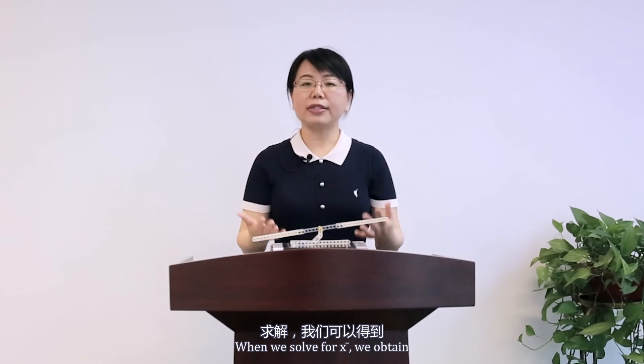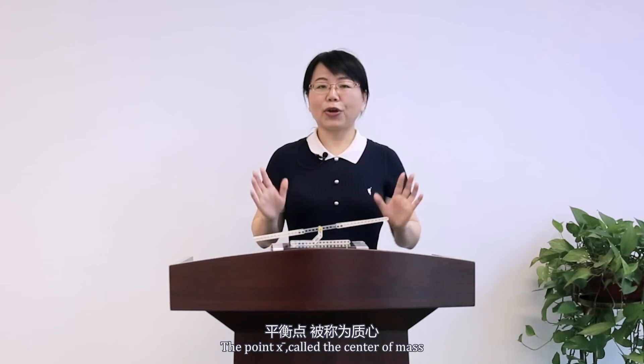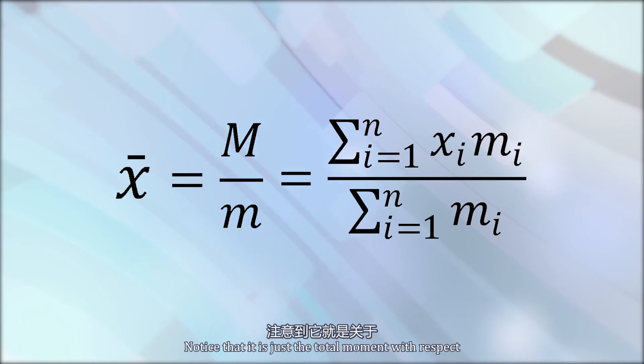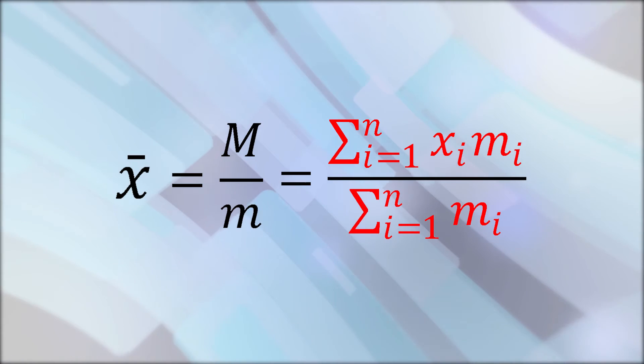Then, when we solve for x-bar, we obtain that x-bar equals capital M over little m. That is, the sum of xi mi over the sum of mi. Then, the point x-bar, called the center of mass, is the balance point. Notice that it is just the total moment with respect to the origin divided by the total mass. That makes sense.